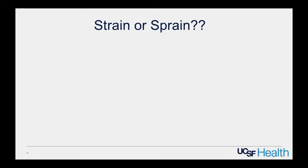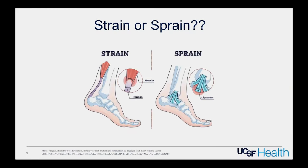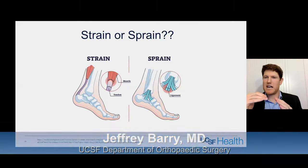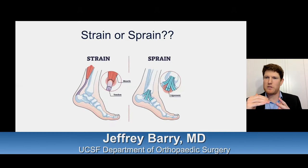Strain versus sprain: a strain is an injury to a muscle, the musculotendinous junction, or the tendon. A sprain is an injury to a ligament. Ligaments attach bones to bones — there's no muscle tissue there, just an attachment from one bone to the other.